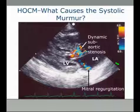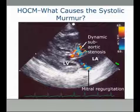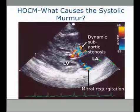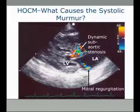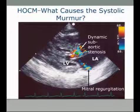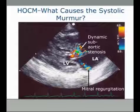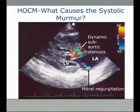So here's a still, and we're going to look at a movie in a minute, of dynamic subaortic stenosis on color flow Doppler. Color flow Doppler is a way of looking at the blood flow in the heart and looking for turbulence. This sort of speckled mosaic of colors tells us that the blood is moving at a fast speed and it's turbulent.